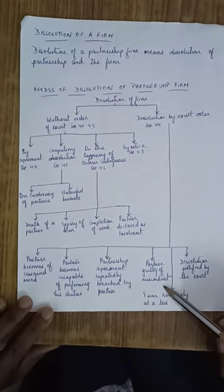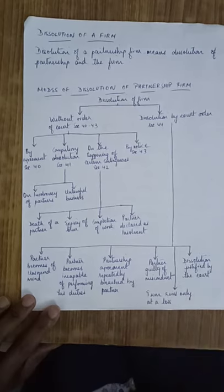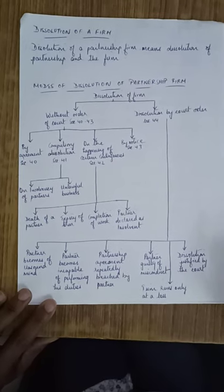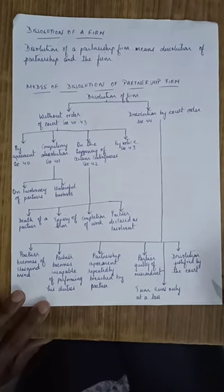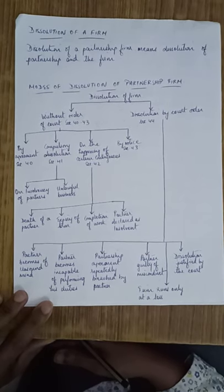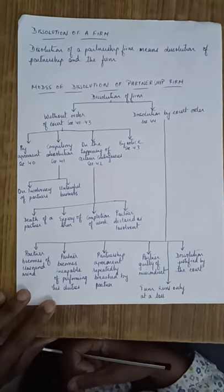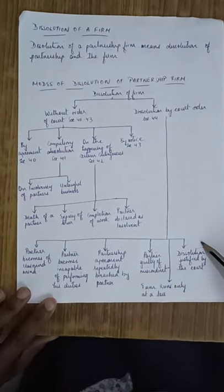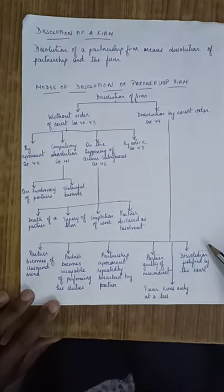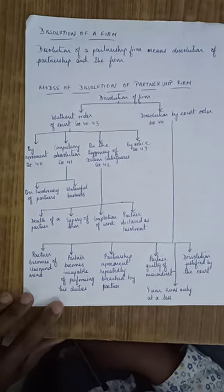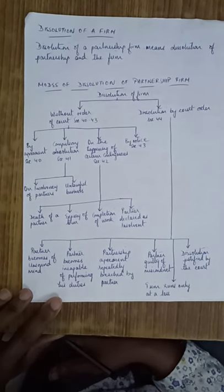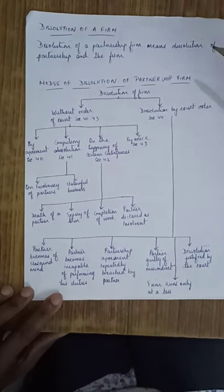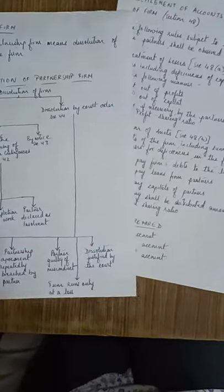The fourth ground for court-ordered dissolution is when a partner is guilty of misconduct — not following the law or acting against the interest of the firm. The fifth is when the firm runs only at a loss despite partners performing their duties. The sixth is when dissolution is justified by the court when no other reason exists but dissolving the firm is to the benefit of everybody. These are the modes of dissolution of a partnership firm.